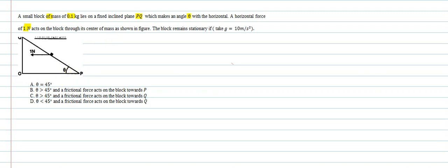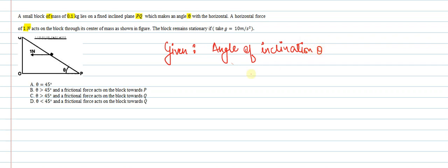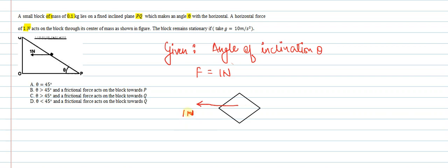Let's write down the given information. The angle of inclination of the inclined plane is theta, and the force on the block is 1 newton. The block has a mass of 0.1 kg. Now we will draw the free body diagram. There is a block of mass 0.1 kg and a force F equal to 1 newton is acting in the horizontal direction.